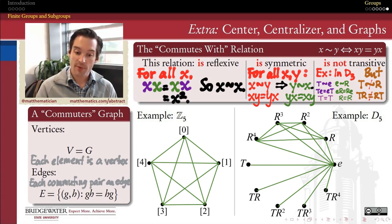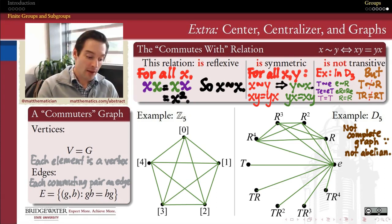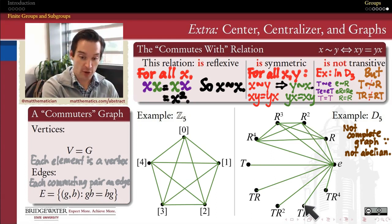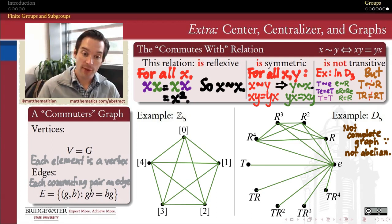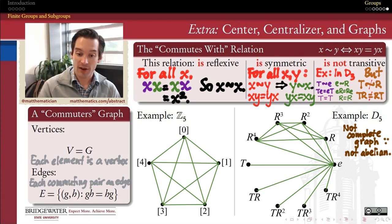One of the things the commuters graph shows very vividly is that it divides the dihedral group into two different types of symmetries: the rotations that are all one big happy family — all pure rotations commute with one another — and the reflections that don't commute with anything except themselves and the identity. This is not a complete graph; there are examples of elements not connected by an edge. T is not connected to R, R squared is not connected to TR cubed. Since it's not a complete graph, this is not an abelian group — only abelian groups have complete commuters graphs.